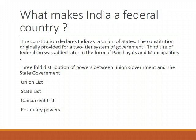The State List contains subjects of state and local importance such as police, trade, commerce, agriculture, and irrigation. The State Government alone can make laws relating to the subjects mentioned in the State List.